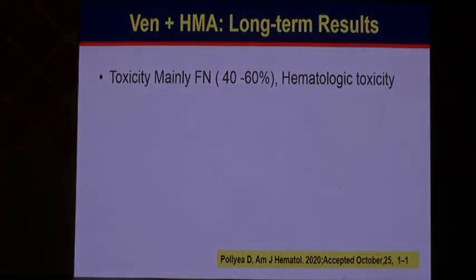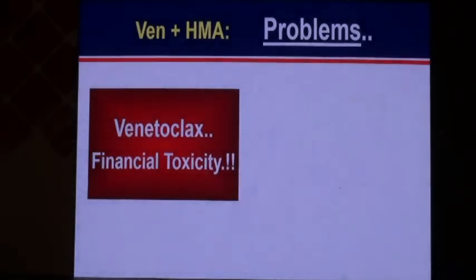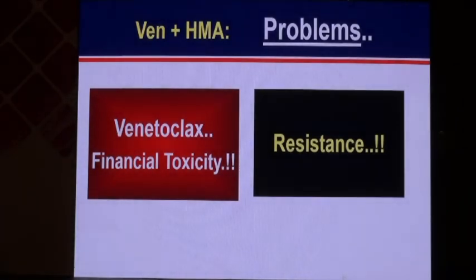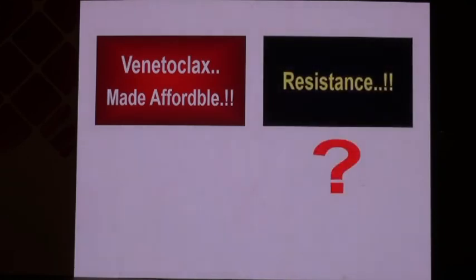Regarding toxicity, there is definitely hematologic toxicity including febrile neutropenia. But the main problem is financial toxicity. Published studies require venetoclax daily for the whole month until progression — costing 130,000 Egyptian pounds per month, up to 1.5 million per year. The other problem is resistance.